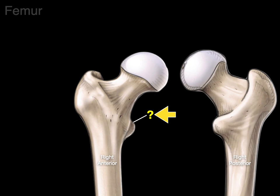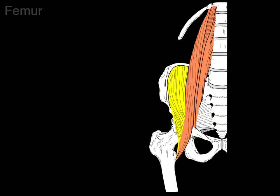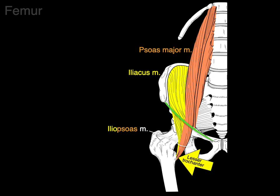Smaller is the lesser trochanter, and we see both here. The lesser trochanter is where the psoas major and the iliacus, as they course below the inguinal ligament, become the iliopsoas muscle — and that's what attaches to the lesser trochanter.